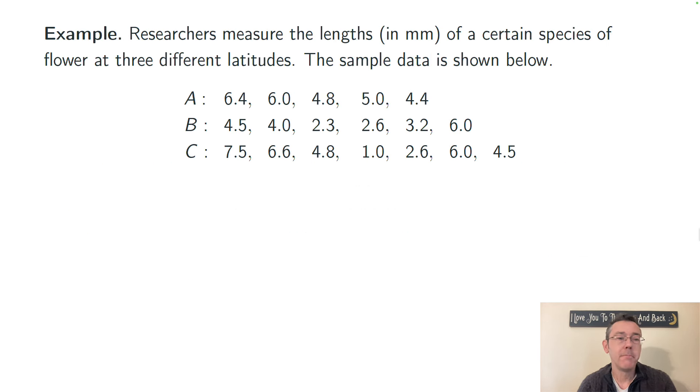A quick example to have in mind before we actually get the results of an ANOVA and talk about how to interpret those and use those. Researchers are measuring the lengths in millimeters of a certain species of flower, of petals of those flowers. Here's some sample data. We've got five, six, and seven observations, so very small sample sizes for each of these three different groups.